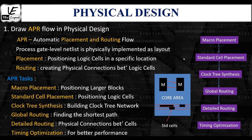Macro placement in physical design refers to the process of positioning large-sized blocks — such as memory blocks and analog blocks — within the core area of an integrated circuit design, by means of periphery placement or logical grouping, in order to achieve optimal performance, area utilization, and routing efficiency.